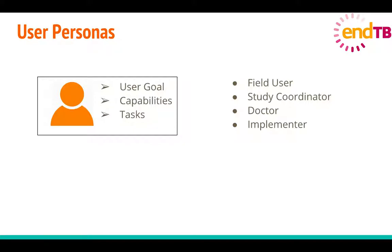User personas are basically representations of the actual users of a system. Each persona is associated with some goals, capabilities, and behavior, and to achieve those goals they would perform some tasks in the system. By using user personas, we are putting ourselves in the shoes of the users to see how the system is used, which helps us empathize with users and better address their needs. For NTB, we arrived at a few personas after discussions with consortium members, keeping them as general as possible across all implementations, though they may vary from site to site.